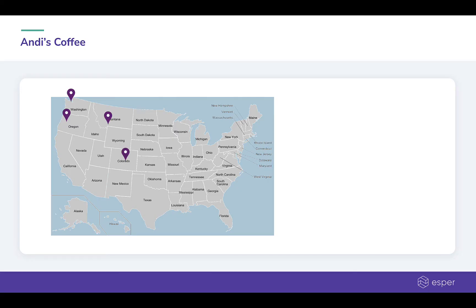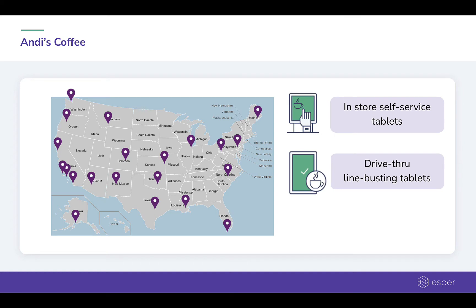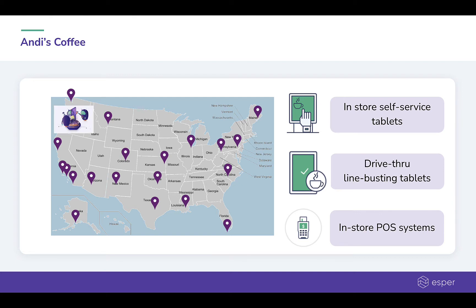Imagine as Andy's Coffee shops, we have a number of cafes distributed across the US. Each of these cafes have a variety of devices: in-store self-service tablets for our customers to use to place their orders, line-busting tablets for our employees to use at the drive-thru lines, and our in-store point-of-sale systems for processing payments. Additionally, we have a test lab in our headquarters where we test our device and application updates. How do we go about organizing all our devices and their configurations at this large scale? One effective way is to group them into collections according to their geographic locations, configurations, and functionalities.